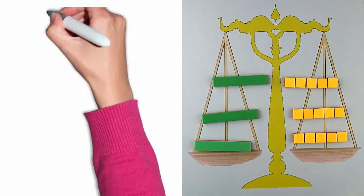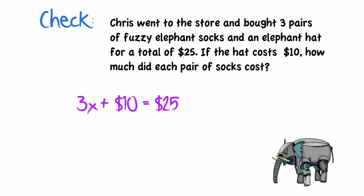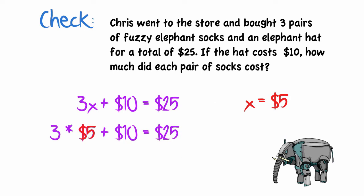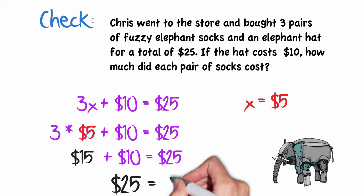The next step of course is to check our problem. We will go back to the original equation that we wrote. Remember, we found that x was equal to $5. So the first step would be to substitute 5 everywhere we see an x. So 3 times 5 is 15 and when we add the 10 we get 25. Since we have $25 on both sides of the equation we know the value of x was 5 and the problem checks.